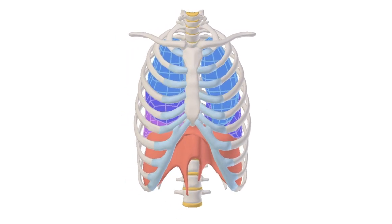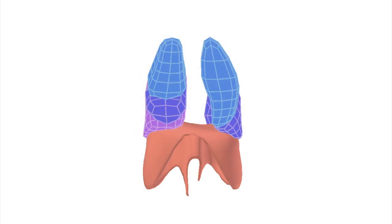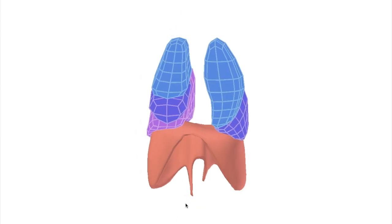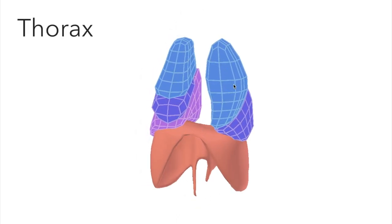Our lungs are protected by our ribcage. Beneath the ribs and above the diaphragm, we call this space the thorax. The lungs occupy the majority of this space.